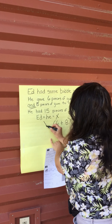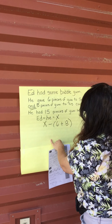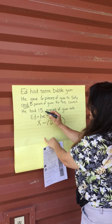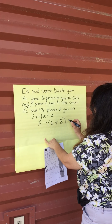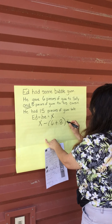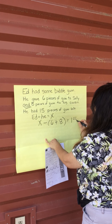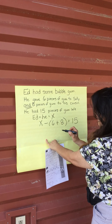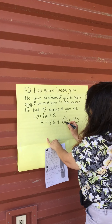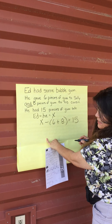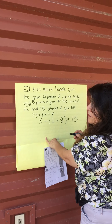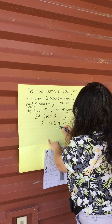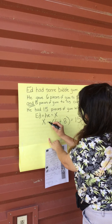So he gave. And then he had 15 pieces of gum left, so equals 15. We're going to try to get X by itself. So six plus eight equals what? 14. So that's a negative.